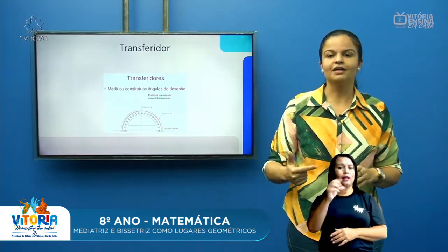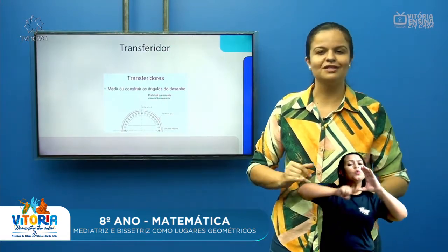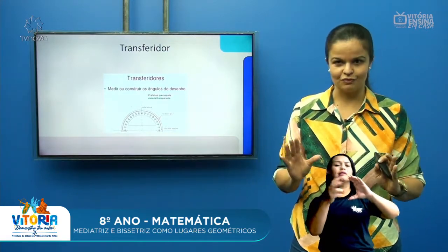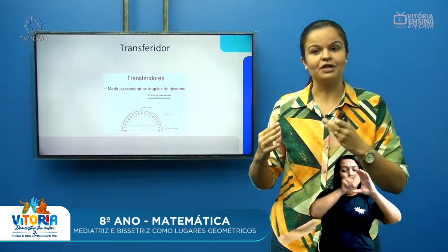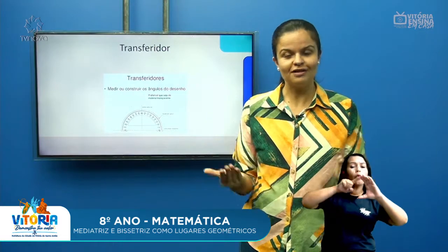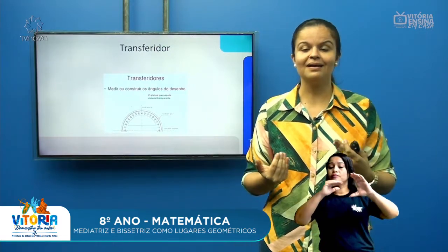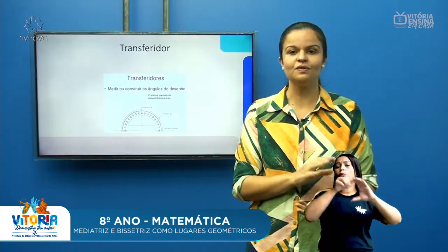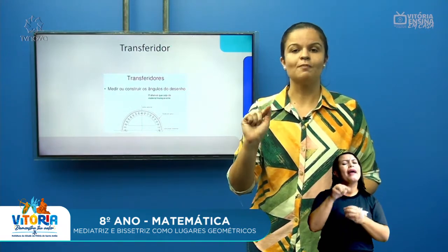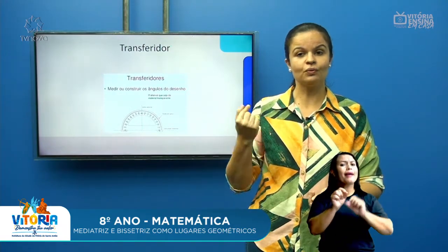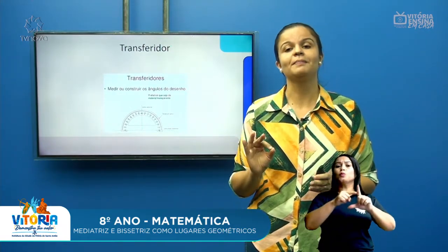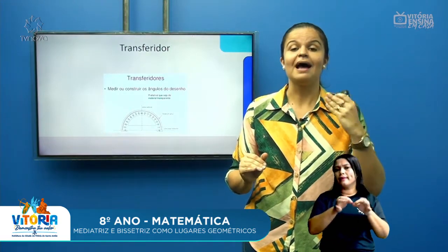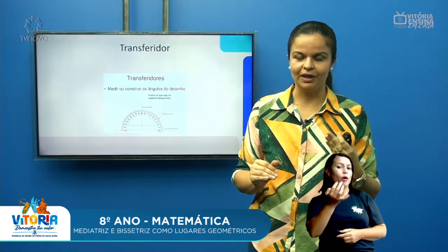Tenho 90, 40, 45, 35, 20 e assim por diante. Todos os ângulos. E essa régua que nós chamamos de transferidor, para que ela serve? Ela serve para a gente construir os ângulos, não só para construir, como também para medir. A gente saber a medida daquele ângulo.